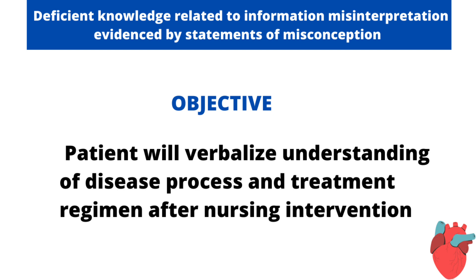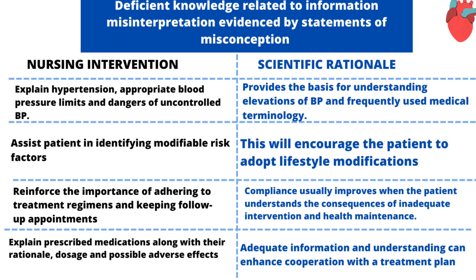The objective for the second nursing diagnosis is that the patient will verbalize understanding of the disease process and treatment regimen after nursing intervention. The first intervention is to explain hypertension, appropriate blood pressure limits, and the dangers of uncontrolled blood pressure to the patient. The rationale is that this provides the basis for understanding the elevation of blood pressure and frequently used medical terms that the patient may not understand.